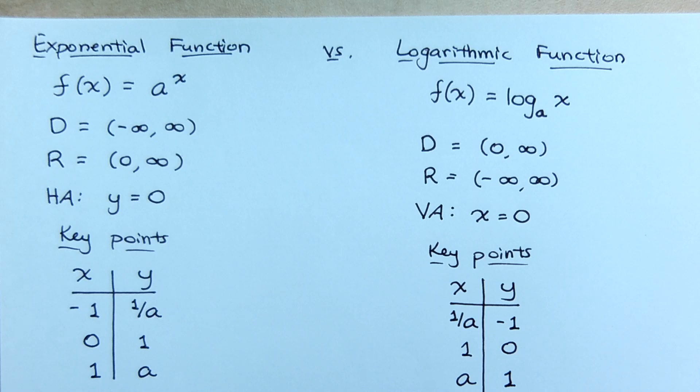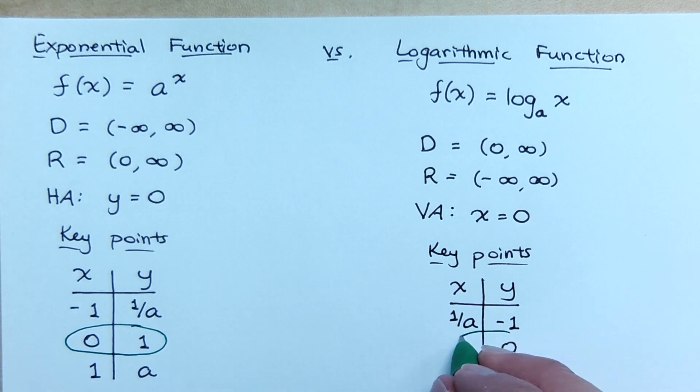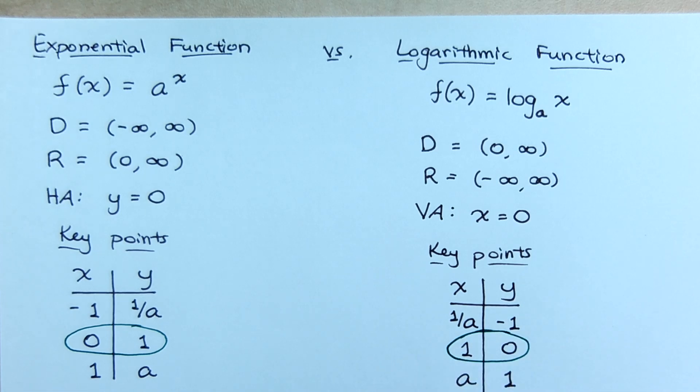When we were graphing exponentials, zero, one was our anchor point. It was the base point. We built everything from that guy. Likewise for the logarithm, one, zero is going to be there for all of our logarithmic functions. So relative to your origin, wherever it happens to be, if you happen to shift it, one, zero is going to be the first point that you graph. And you build everything else from there. And we're going to look at those graphs here in just a moment.